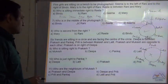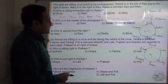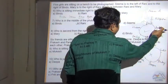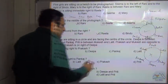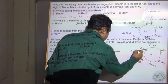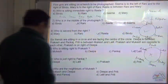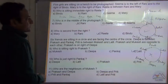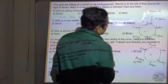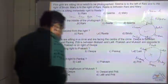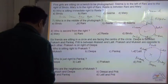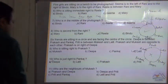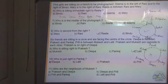Who is sitting to the right of Prakash? Lalit is sitting to the right of Prakash, so the answer is D. Who is just to the right of Deepa? Deepa is right of Prakash — so the answer is A.